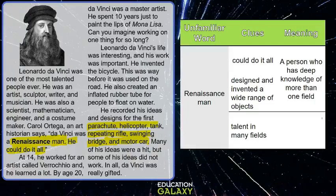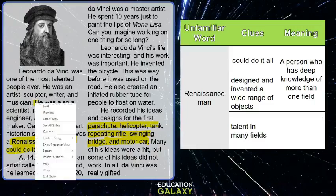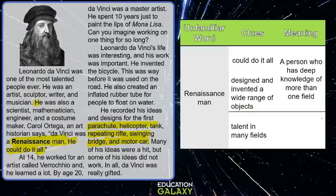Let's find out more. The clue is he had talent in many fields. In the first paragraph, it says he was also a scientist, mathematician, engineer, and a costume maker. Leonardo da Vinci had talent in so many fields.